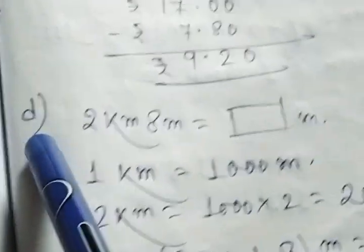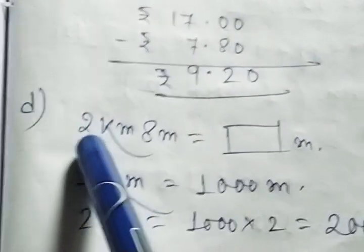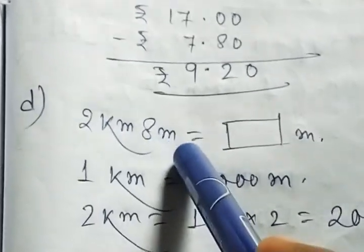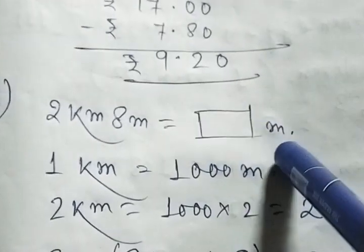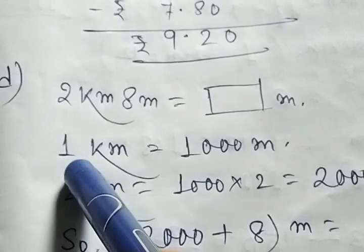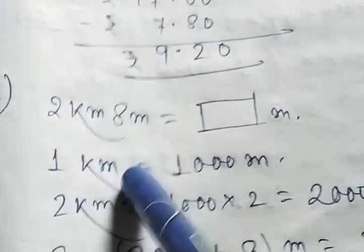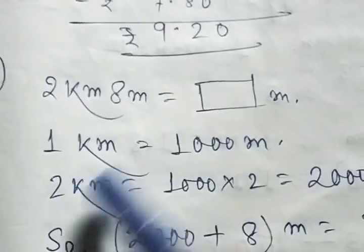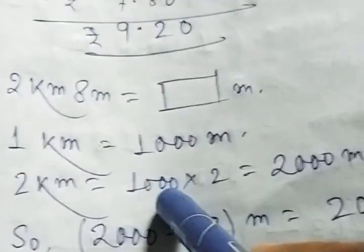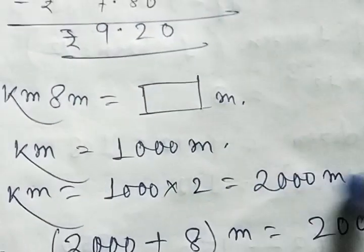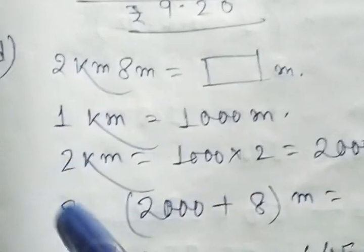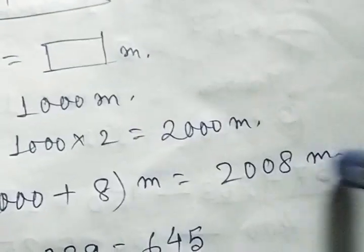Next question. 2 kilometers 8 meters equal to how much meters? All of you know 1 kilometer equal to 1000 meters. So, 2 kilometers equal to 1000 multiplied by 2 equal to 2000 meters. Same way, 2000 plus 8 meters equal to 2008 meters.